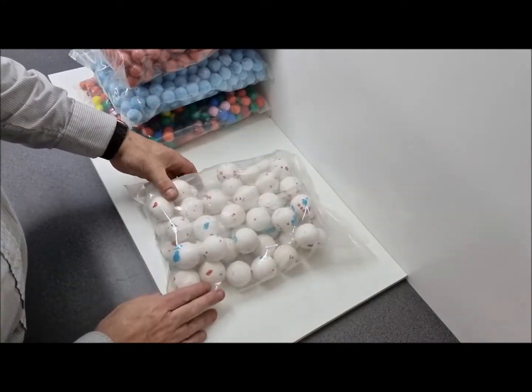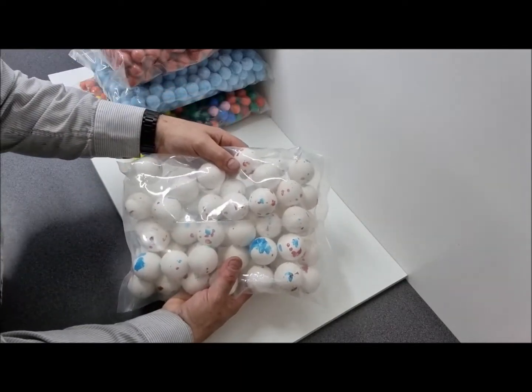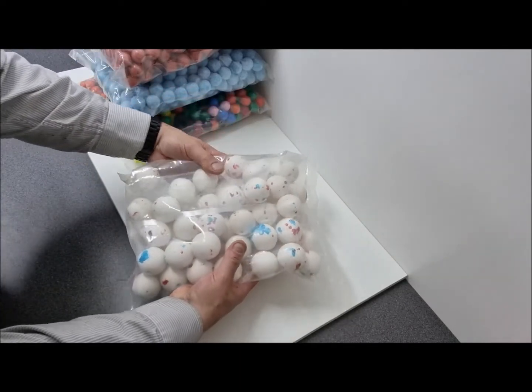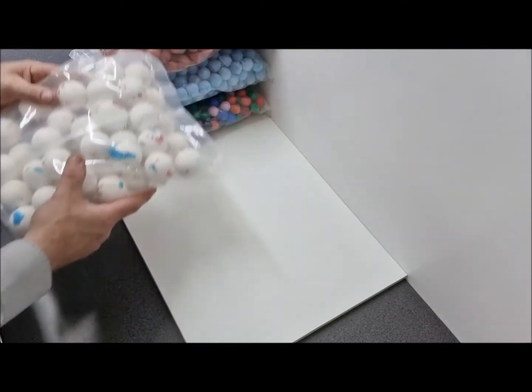These ones are the giant gobstoppers, around 40 millimeters in diameter, twice the size diameter of the other ones, the first small ones, but considerably larger weight wise.